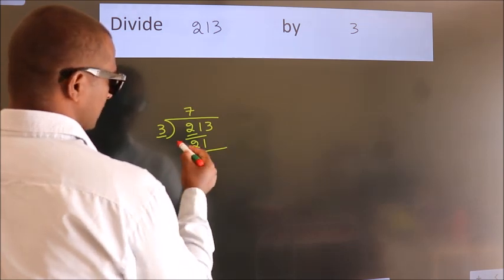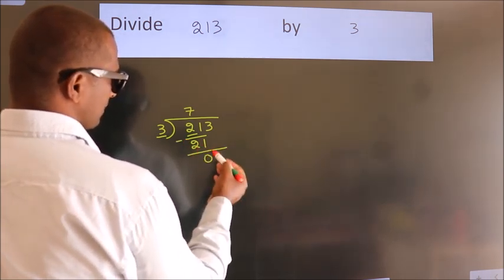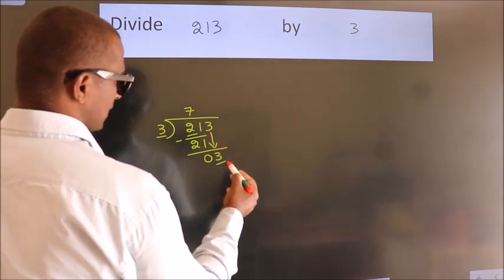Now, we should subtract. We get 0. After this, bring down the next number. So, 3 down. So, 3.